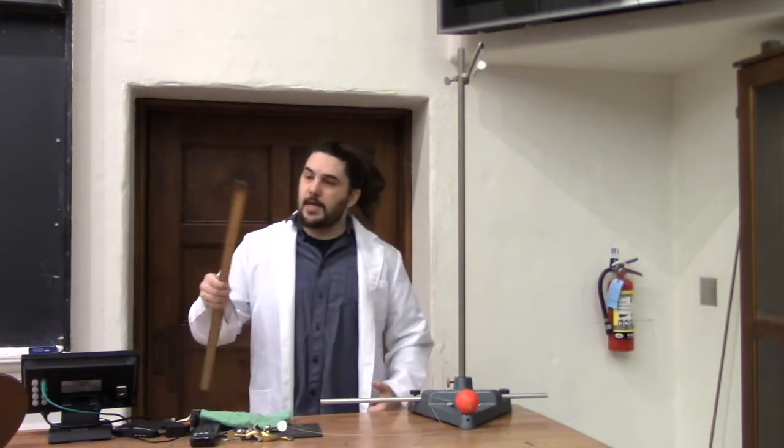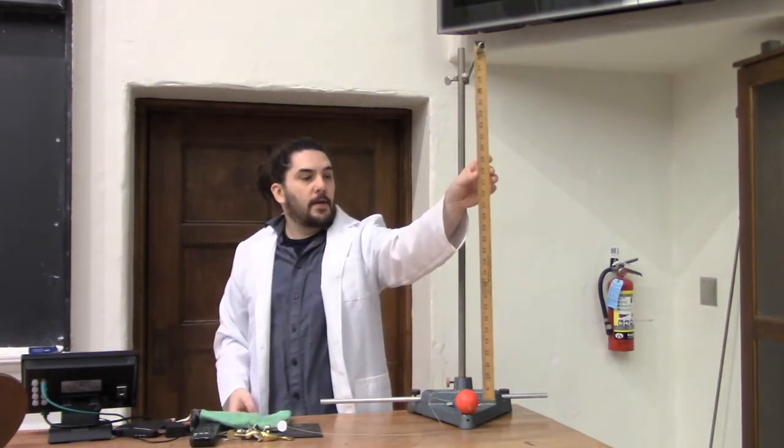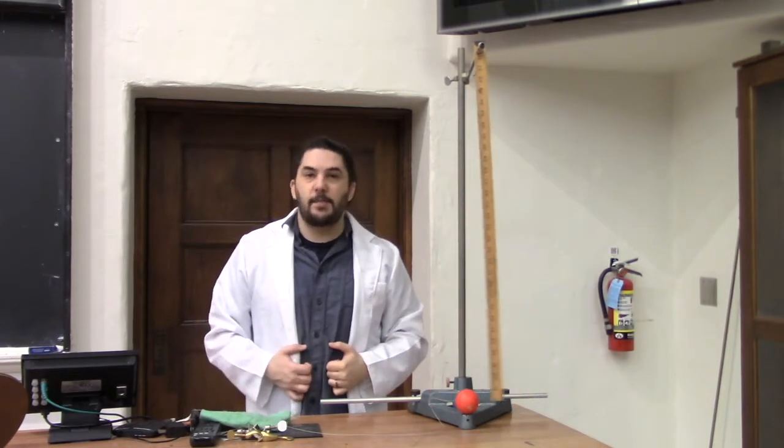You know, any rigid body can be a pendulum. Take this ruler, for instance. If I hang it up and swing it back and forth, it oscillates like a pendulum.